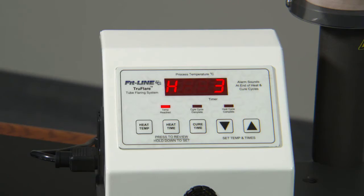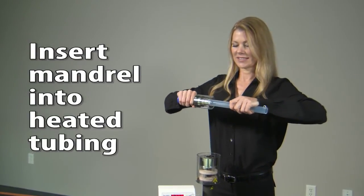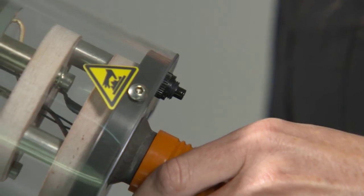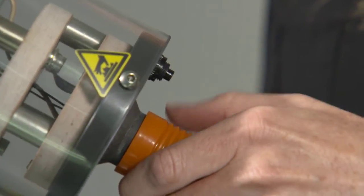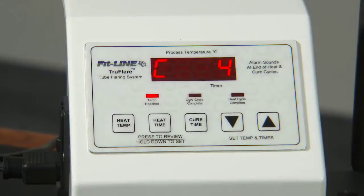Once the heat cycle has completed, you will be notified by an audible sound. Five, insert the flaring mandrel into the heated end of the tubing and push the button on the portable heater to activate the curing cycle timer. When fully cured, an audible sound will alert you.